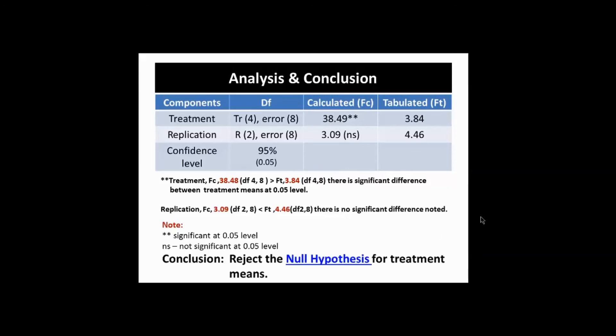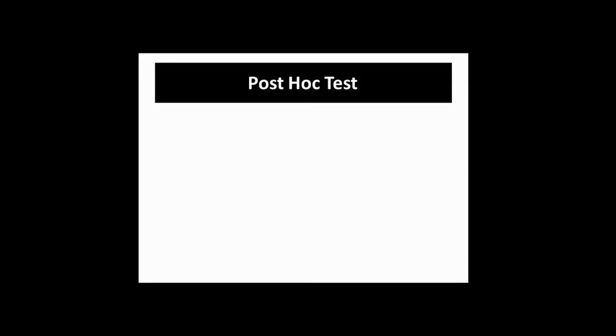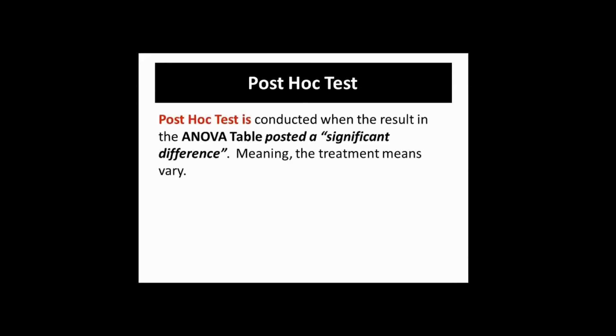The treatments applied are significantly different between treatment means at the 0.05 level, while replication shows no significant difference. Our conclusion rejects the null hypothesis for treatment means, meaning the means of the different treatments are significantly different. With that, we need to do a post-hoc test to find out which treatments vary from each other.